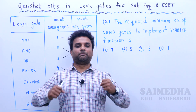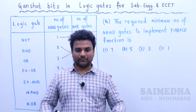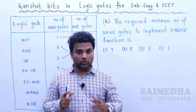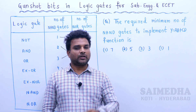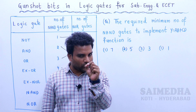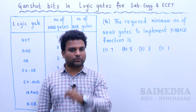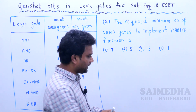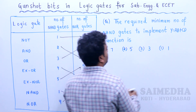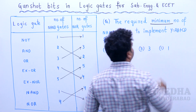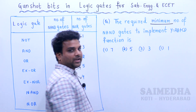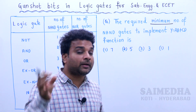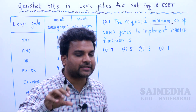Have a strong breath and see the question once again. Where is the twist? The twist is the word 'minimum.' There is a minimum number of NAND gates.